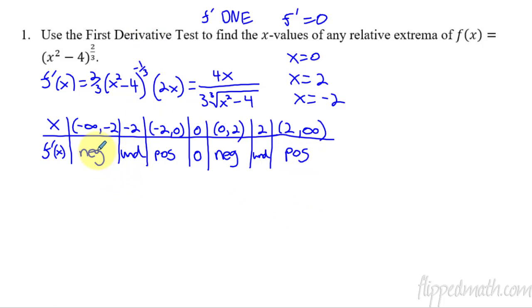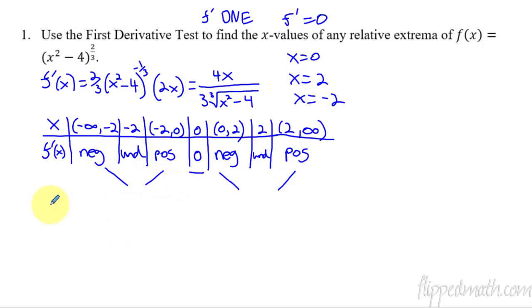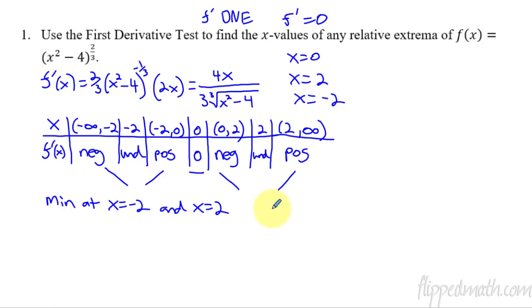So here's what we have: negative slope, then undefined — so this is going to be some type of corner or cusp — then positive, then a slope of zero, then negative again, then probably another sharp corner, then positive. You can see negative slope going down, sharp corner, going up, slope of zero, going down, sharp corner, going up again. So we have a minimum at x equals negative two and x equals two, because f prime changes sign from negative to positive. And we have a maximum at x equals zero, because f prime changes sign from positive to negative.